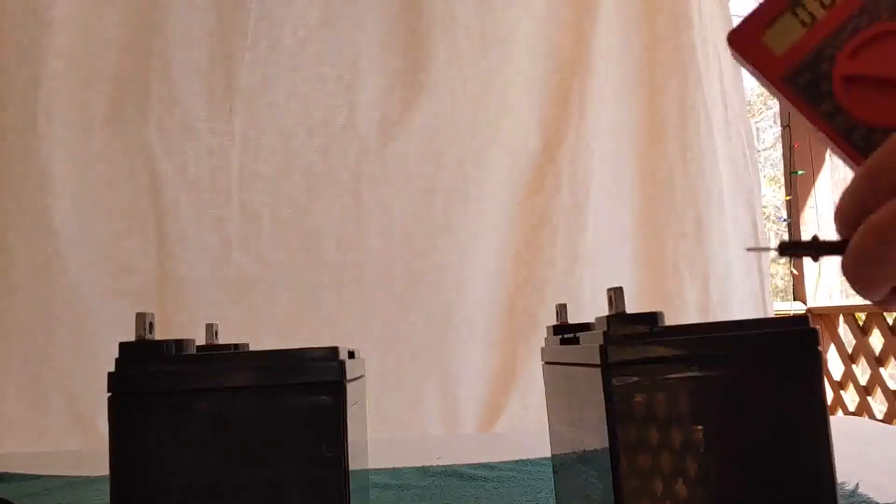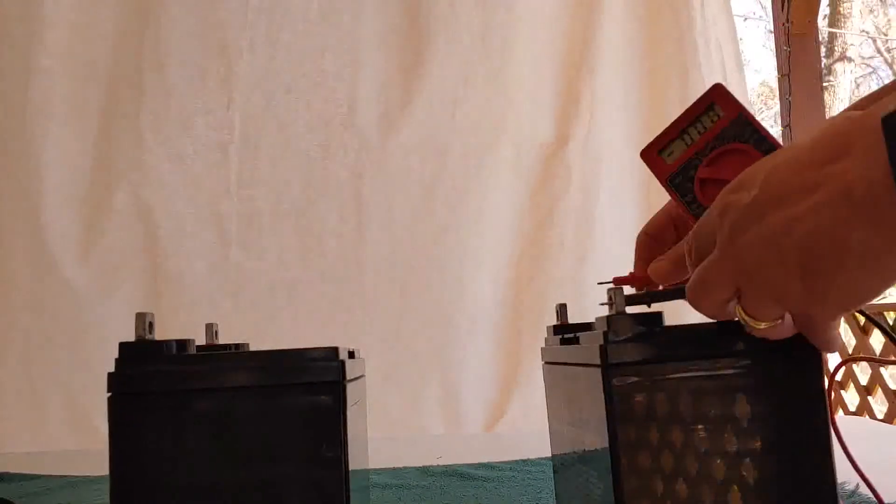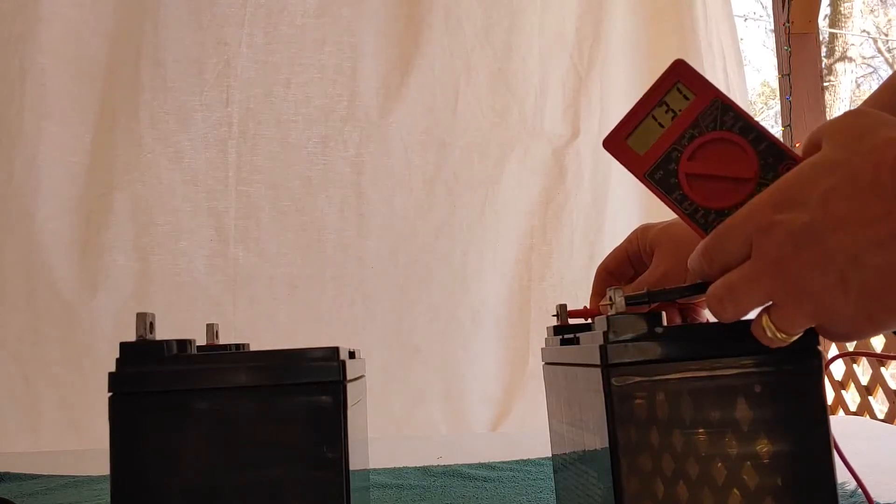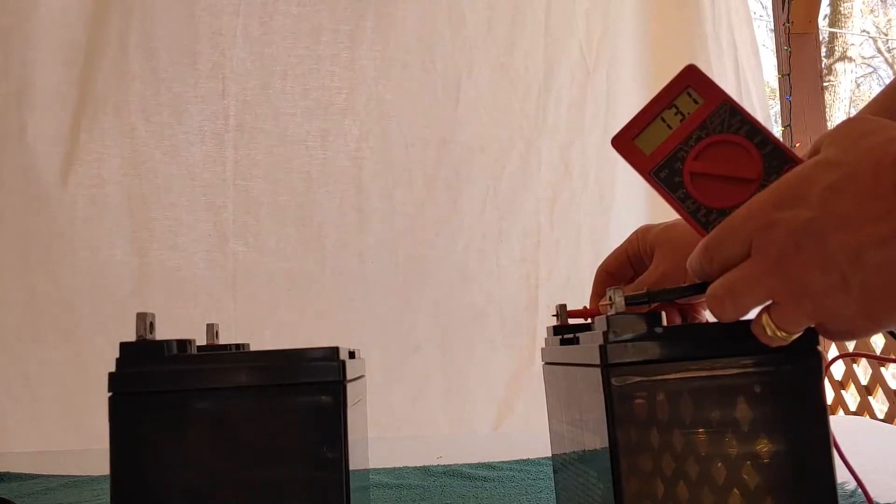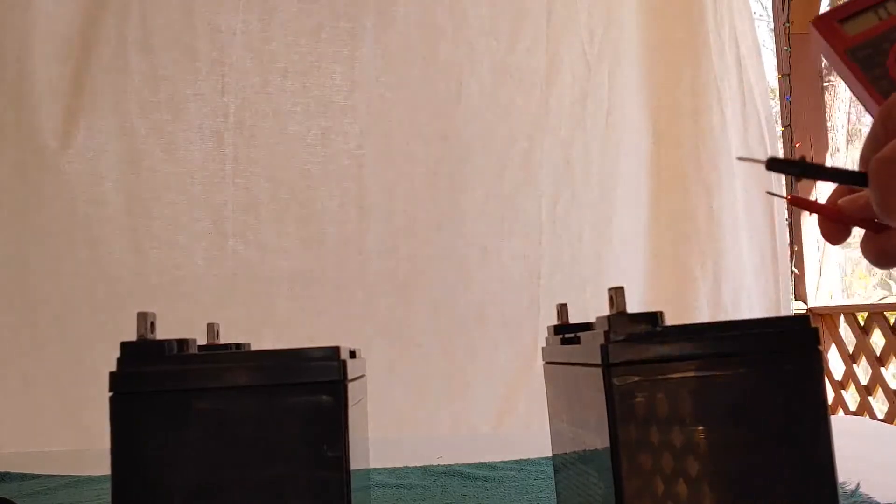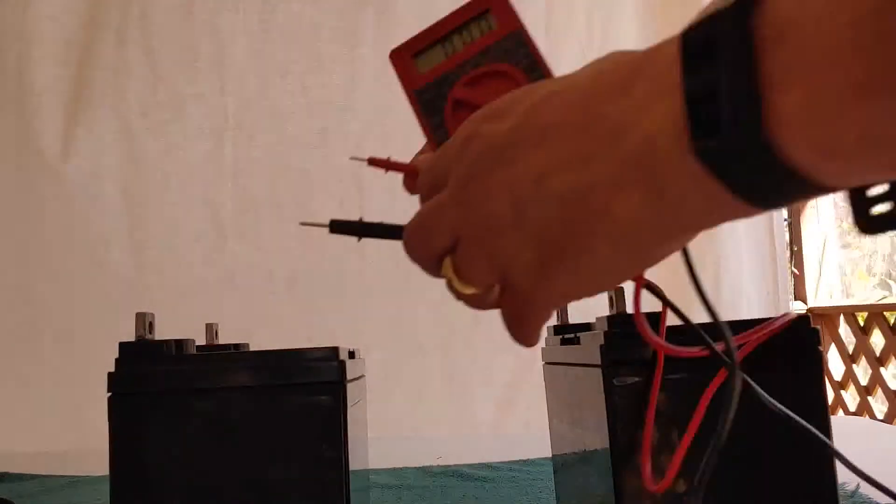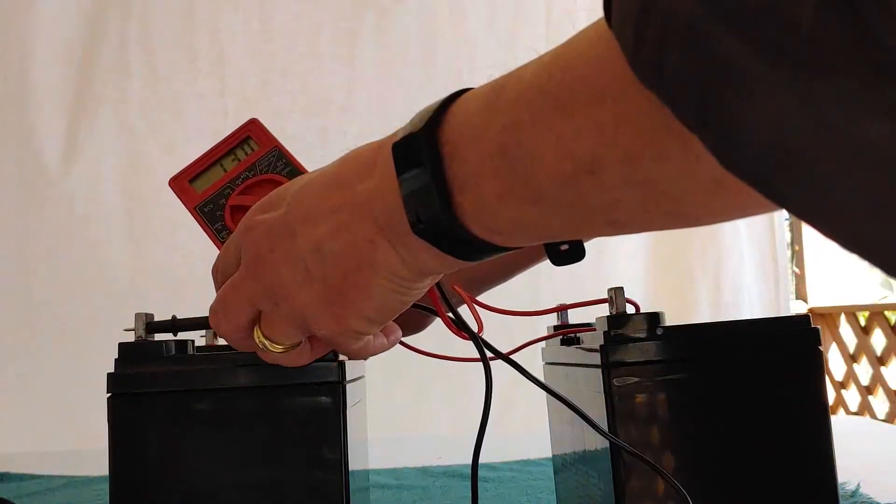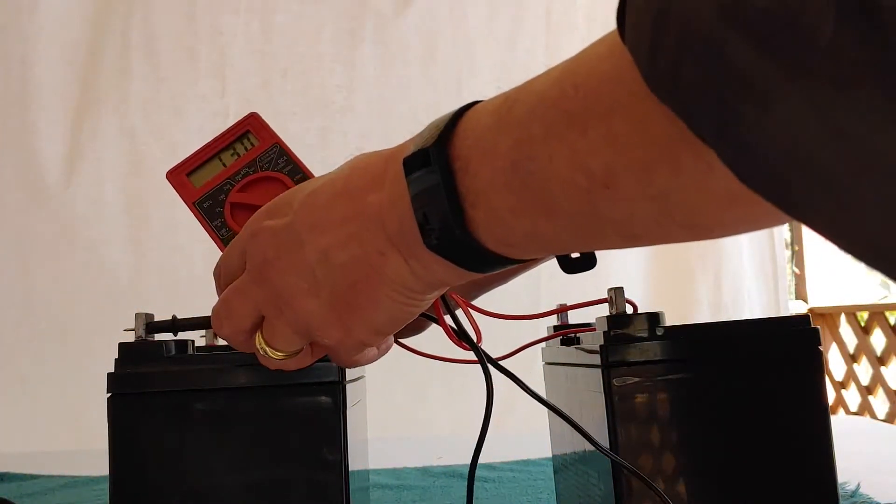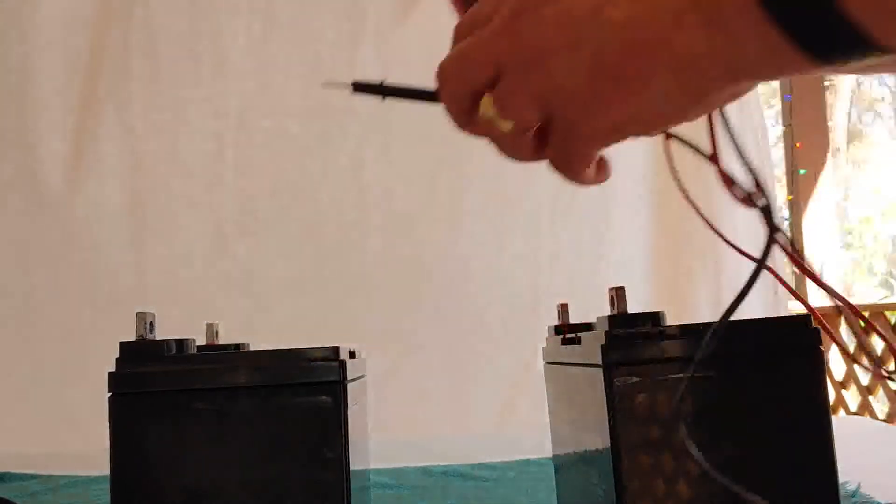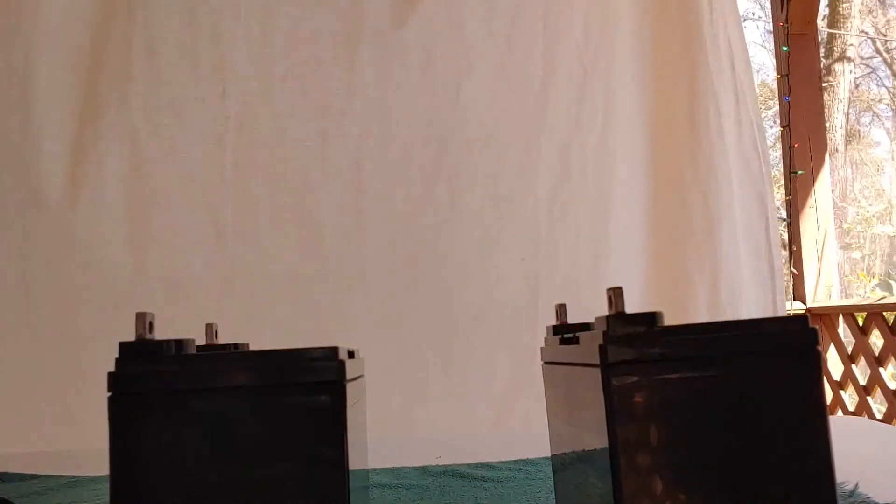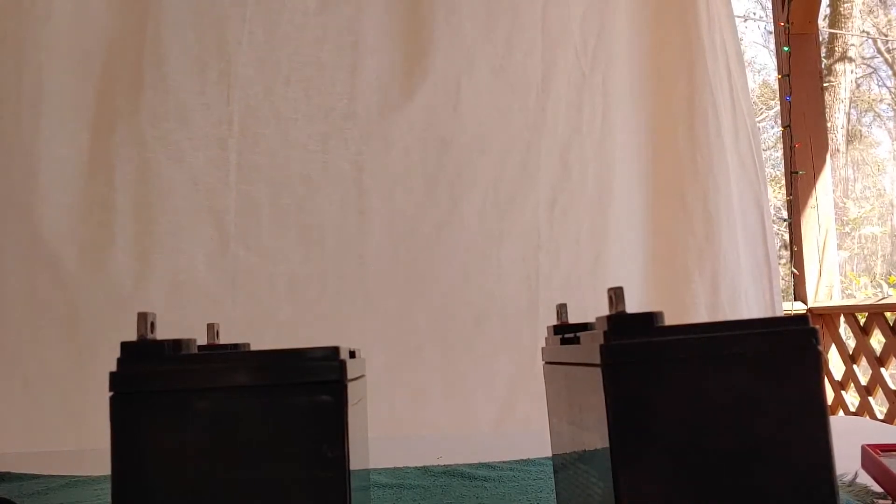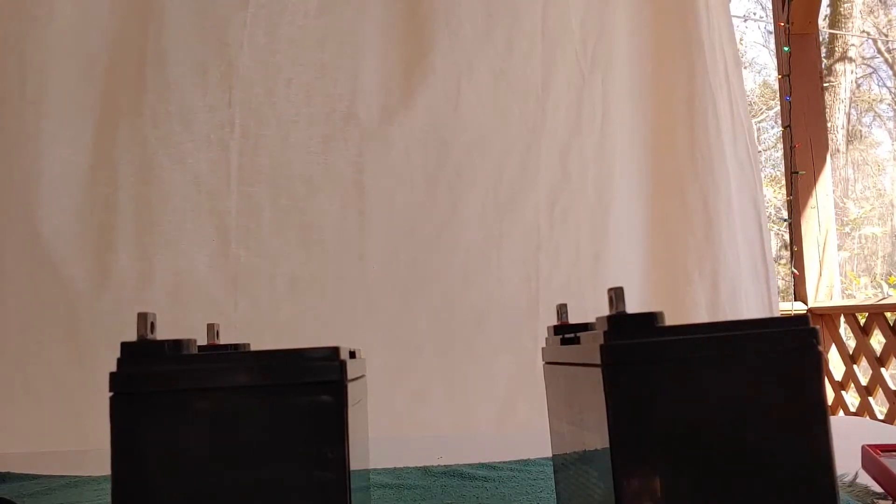Our first battery here, red to red, black to black, 13.1 volts. Let's check the next one. It is 13.0, so they are just about the same. In fact, they are close enough to say they are the same. You want your batteries to be the same state of charge when you begin.